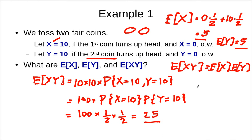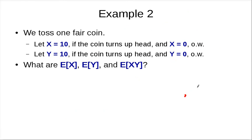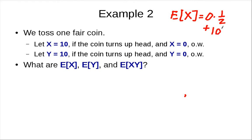Let's look at another case. Now we have one fair coin and two random variables that are essentially the same. We let X be 10 and Y be 10 if the coin turns up heads. The expected value of X is: with probability one half you get 0, and with probability one half you get 10, so the expected value of X is 5. Because they are essentially the same random variable, the expected value of Y is also 5.